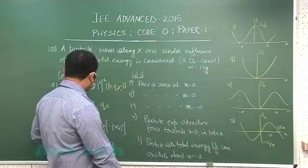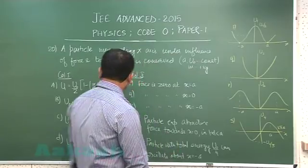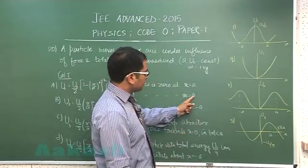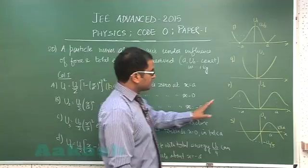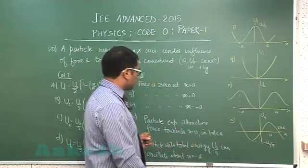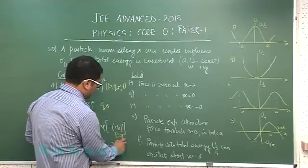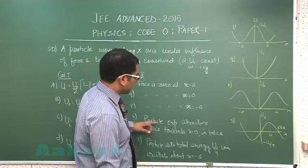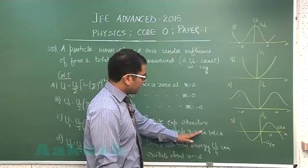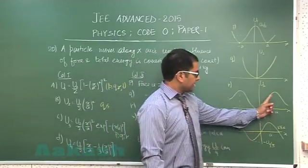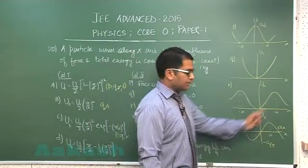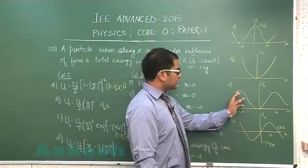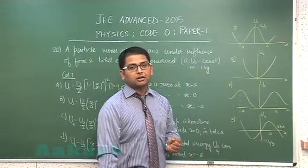Now let us go with option C. For option C, the corresponding graph is here. You could see at zero, a, and minus a, in all cases potential energy is either locally maximum or minimum, so force would be zero. So P, Q, R are there. This option is also correct because particle experiences attractive force towards x equals zero in |x| less than a. In this region it is locally minimum, so S would also be valid. This would not be valid because at x=-a it is locally maximum, so there is no point of oscillating.